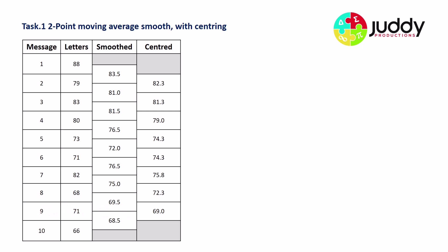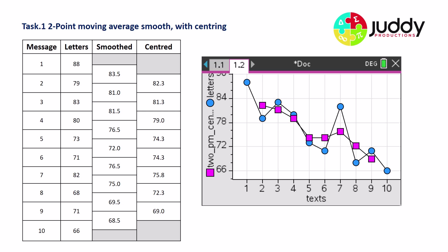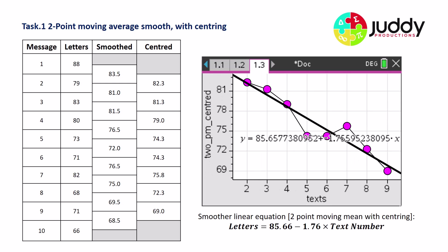Now that we have centered data against exact message numbers, we can graph them. The blue line shows the original letter counts and the purple shows the two-point moving average smooth with centering, which has reduced the variational fluctuation. From this we can also do a linear regression: letters = 85.66 − 1.76 × text number.